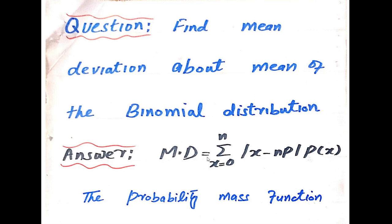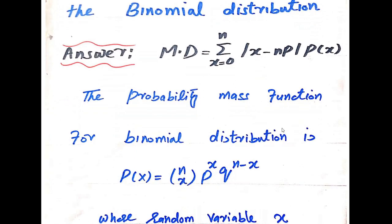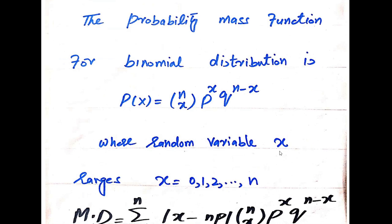By definition, mean deviation is equal to the sum over x ranging from 0 to n — because in the binomial distribution, the range of the random variable is from 0 to n — of |x minus np|, where np is the mean since we solve mean deviation about the mean. Here p(x) is the probability mass function of the binomial distribution, also called the probability density function, but since binomial is a discrete distribution we call it the probability mass function: p(x) = nCx · p^x · q^(n-x), for x from 0 to n.